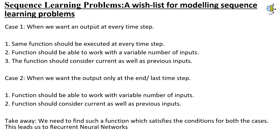A wishlist for modeling sequence learning problems. Case 1: when we want an output at every time step, the same function should be executed at every time step, the function should be able to work with a variable number of inputs, and the function should consider current as well as previous inputs. Case 2: when we want the output only at the last time step, the function should be able to work with a variable number of inputs and consider current as well as previous inputs. The takeaway is we need to find a function which satisfies conditions for both cases. This leads us to recurrent neural networks.